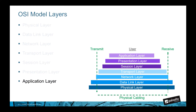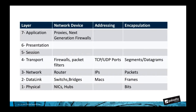An example of the application layer would be HTTP, which packages the data needed to send and receive web page content. When two devices or hosts are communicating, they exchange information by means of that layer's protocol. The data to be transmitted at layer seven of the transmitting device is a PDU, or protocol data unit. The PDU is passed down to the next layer where it's known as an SDU, or service data unit.